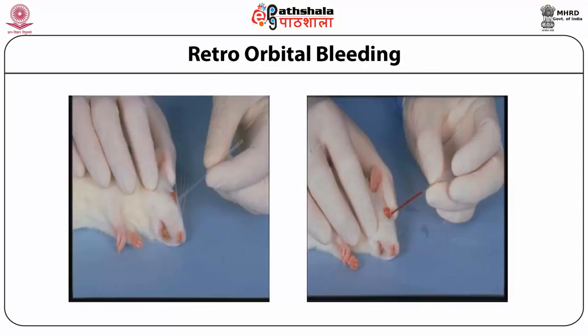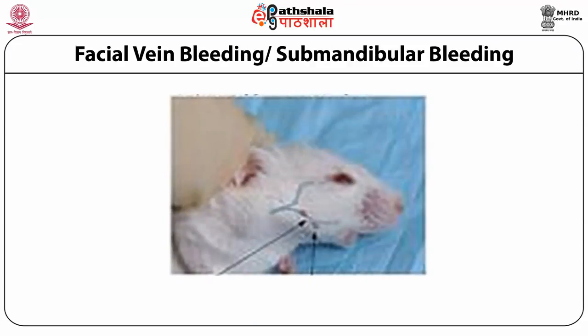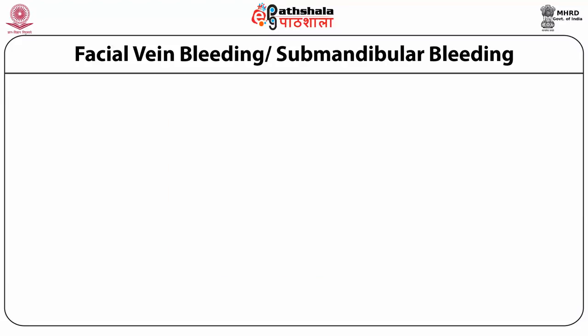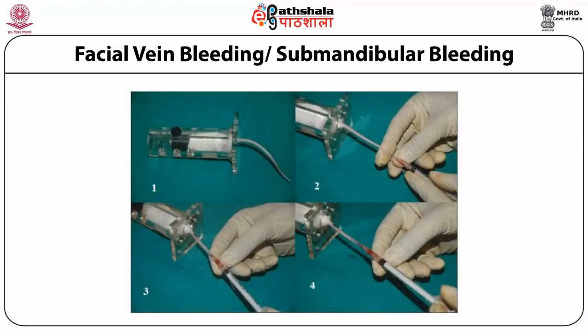Another method is tail vein bleeding where the animal is restrained and not more than 200 microlitres of blood can be collected. Nowadays, submandibular bleeding from the facial vein is also commonly used — by puncturing a small area in the facial vein region, blood can be collected very easily.